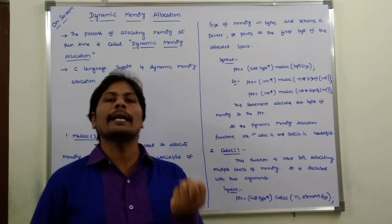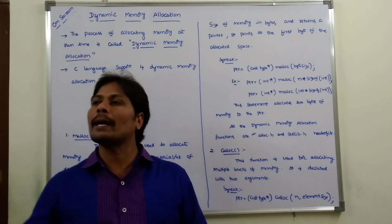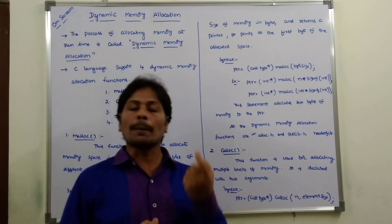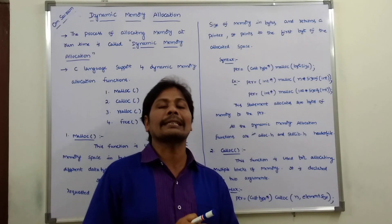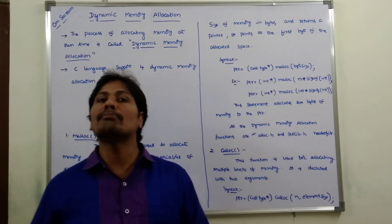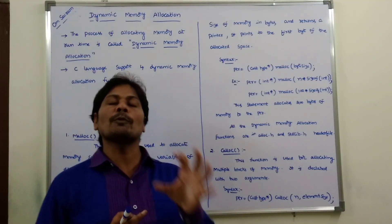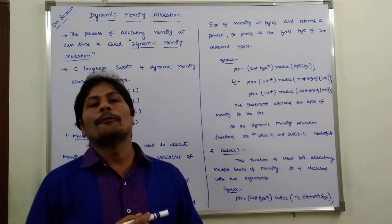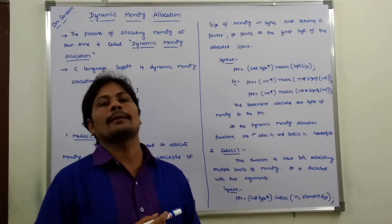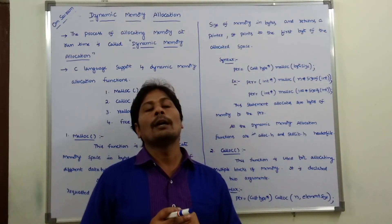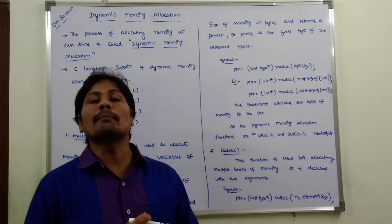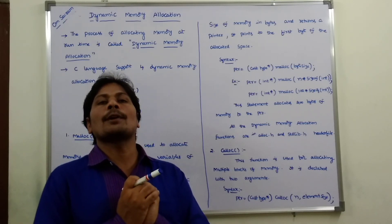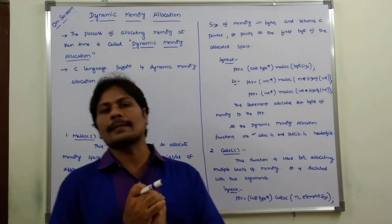For example, an int variable occupies two bytes, a char variable occupies one byte, a float variable occupies four bytes, and a double variable occupies eight bytes. These sizes are based on the Windows operating system.